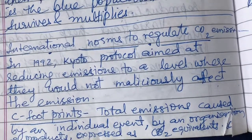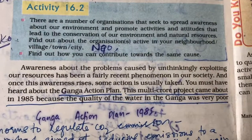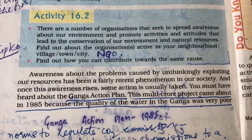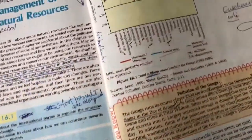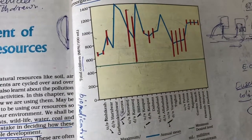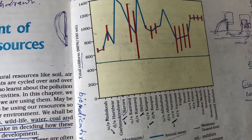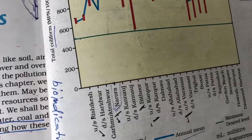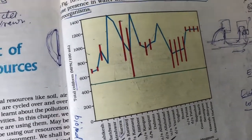In 1985, there was the Ganga Action Plan to reduce pollution in the Ganga — a multi-crore project. The river Ganga moves down from Rishikesh, then to Haridwar, Narora, Kannauj, Allahabad, Varanasi, and then Bihar — Patna, Buxar — before finally meeting the sea.